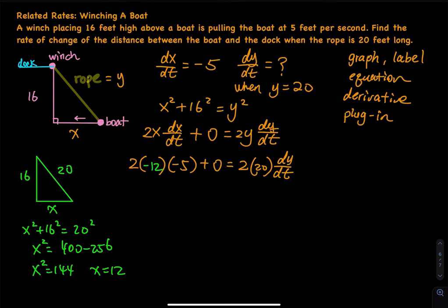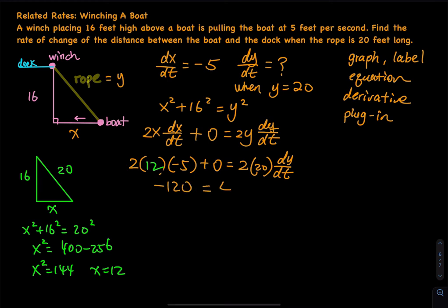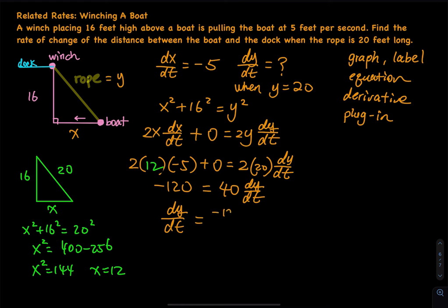Now solve for dy/dt. Plugging in x equals 12: 2 times 12 times negative 5 equals 2 times 20 times dy/dt. That gives negative 120 equals 40 times dy/dt. So dy/dt equals negative 120 divided by 40, which equals negative 3.